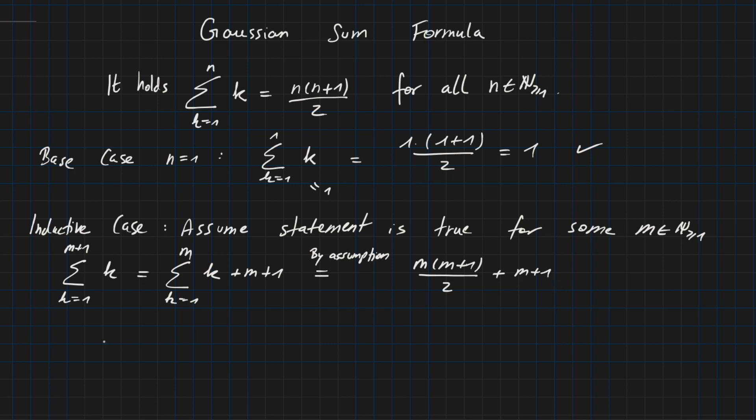And now we can further rephrase it to m times m plus 1 over 2 plus 2m plus 2 over 2 equals m times m plus 1 plus 2m plus 2 over 2. And now we can simplify the numerator here further. So we have m plus 1 times m plus 2 over 2.